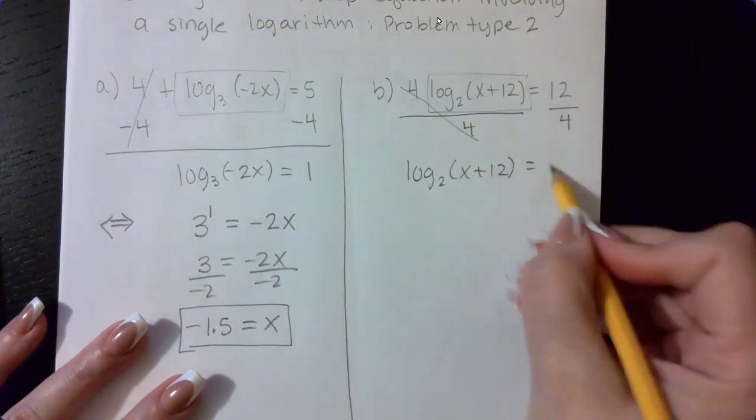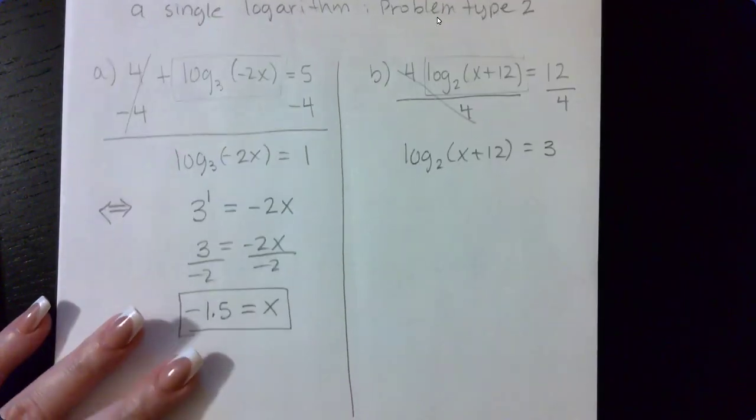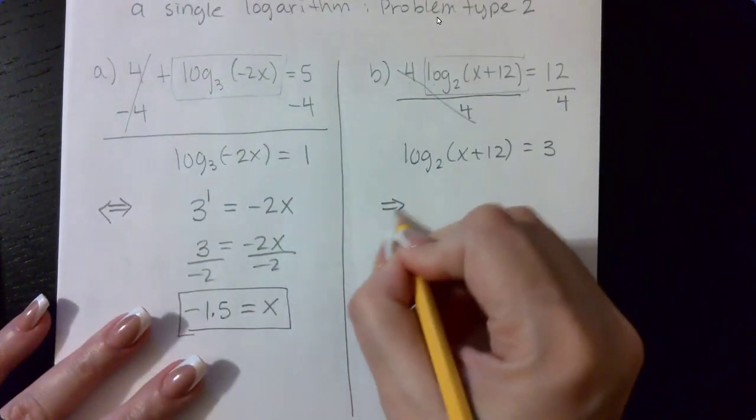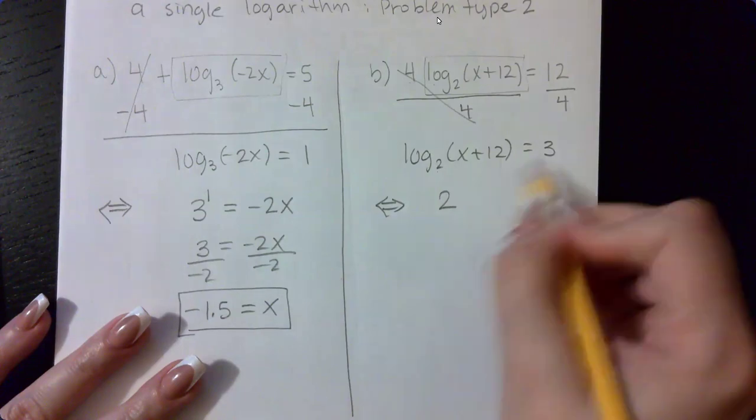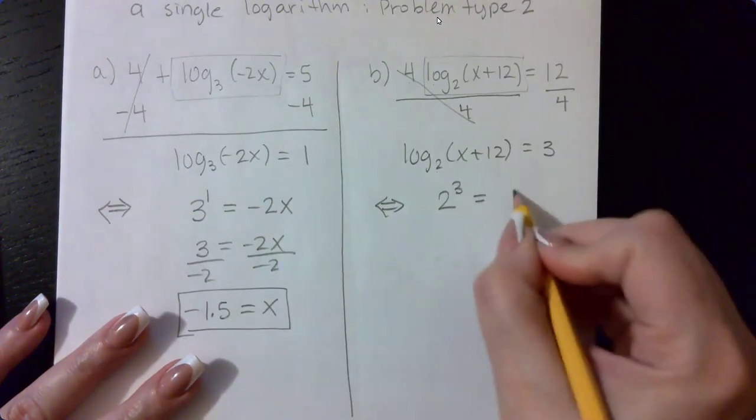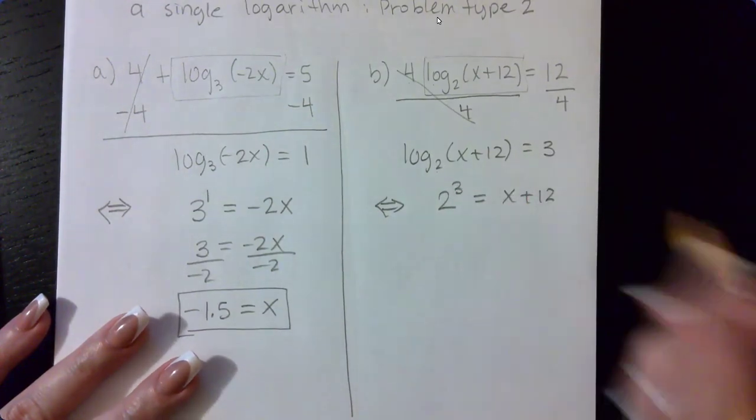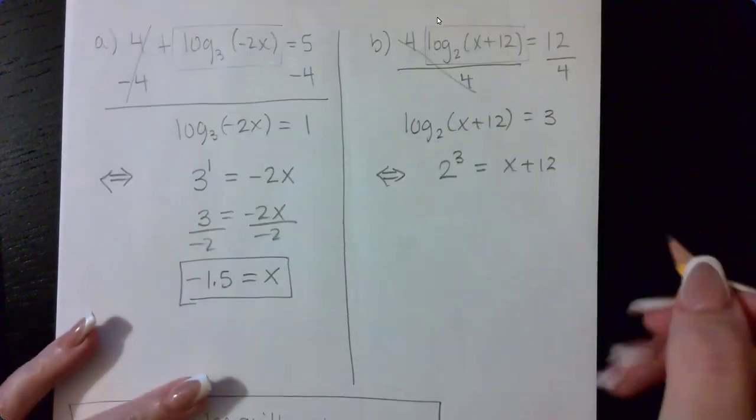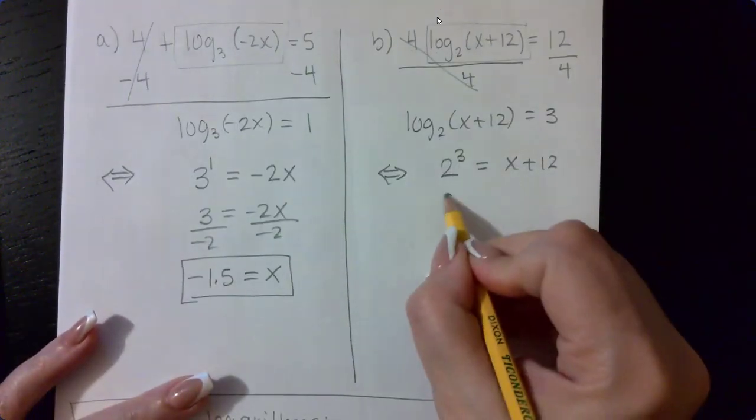So I end up with the logarithmic expression isolated, but it is now equal to 3. And then I can apply my definition of logarithms. So the base 2 with the exponent of 3 equal to x plus 12. And I can solve this resulting equation. 2 to the power 3 is 8.